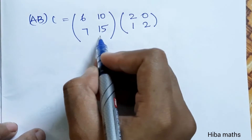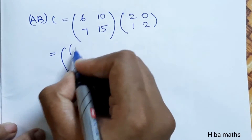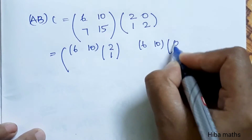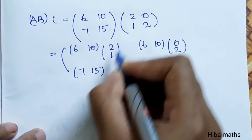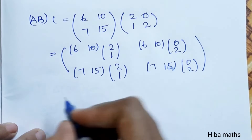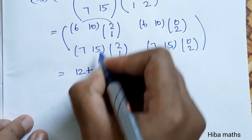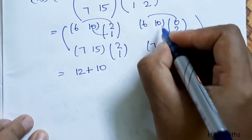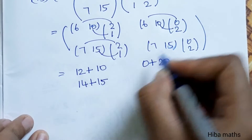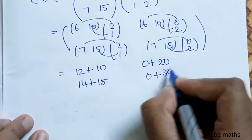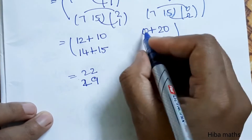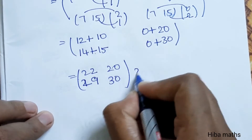Now compute AB into C. AB = [6,10; 7,15] and C = [2,0; 1,2]. Row-column method: first row first column: 6×2 + 10×1 = 12 + 10 = 22; first row second column: 6×0 + 10×2 = 0 + 20 = 20; second row first column: 7×2 + 15×1 = 14 + 15 = 29; second row second column: 7×0 + 15×2 = 0 + 30 = 30. So (AB)C = [22,20; 29,30]. This is the second result.